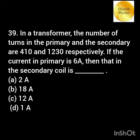In a transformer, the number of turns in the primary and the secondary are 410 and 1230. If the current in the primary is 6 ampere, then that in the secondary coil is?